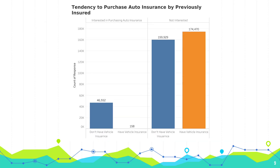The relationship between response and previously insured is very similar to the relationship between response and car damage. From the column chart, it is very obvious that customers who don't currently have vehicle insurance are more willing to buy vehicle insurance, while very few customers who already have vehicle insurance are interested in buying it.